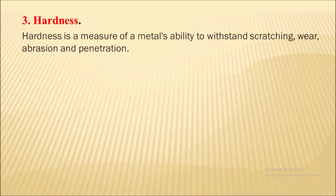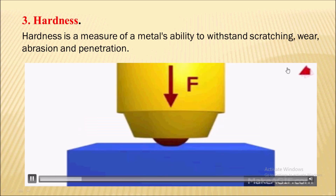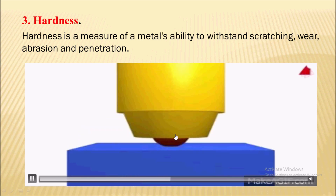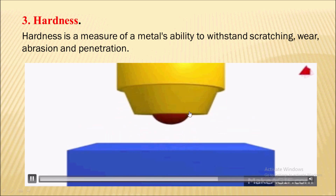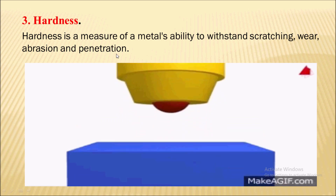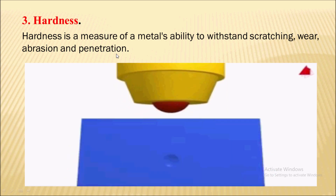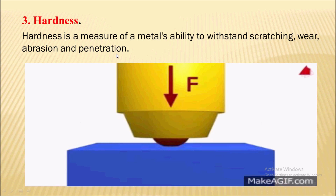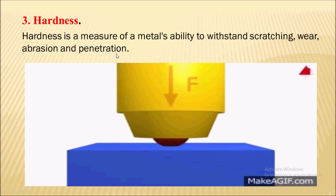Next is hardness. Hardness is a measure of a material's ability to withstand scratching, wear, abrasion, and penetration. In this animation you can see a material withstanding penetration by a load. Hardness is the property of a material to cut another material. For example, a cutting tool must be harder than the work piece material so that it can cut the work piece material.